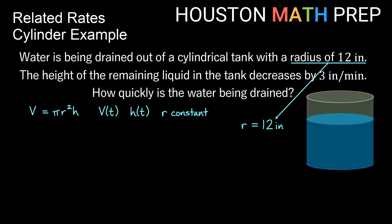The rest of the problem says we want to find dV/dt because it says how quickly is the water being drained, and that has something to do with the change in volume. If dh/dt is equal to negative 3 inches per minute, let's talk about how we know that. We know that the height of the remaining liquid is changing, so that's dh/dt, and it's decreasing by 3 inches per minute. So the rate of change should be a negative 3 inches per minute because it's decreasing.